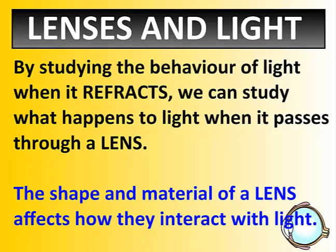Where light bends to is what we can study. There are two things that will really affect how much a lens refracts or bends light: the shape of the lens and the material it is made from. We're going to ignore the material for now and assume all lenses are the same material — glass, plastic, whatever — and focus on the shape.